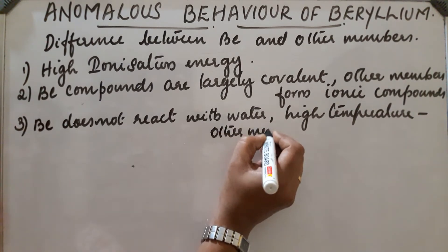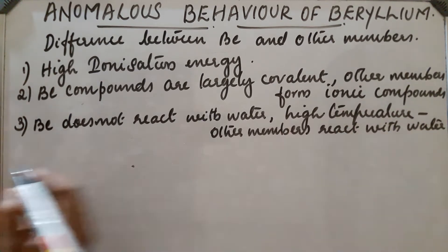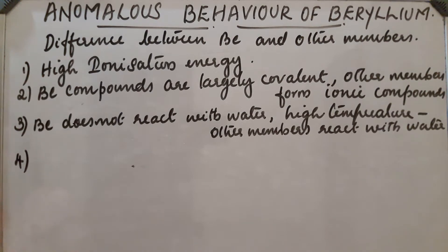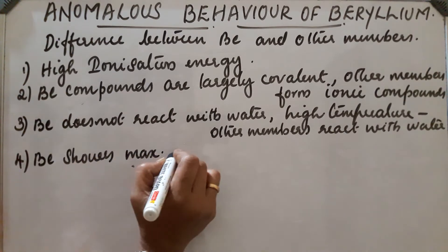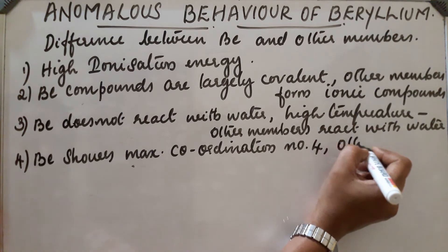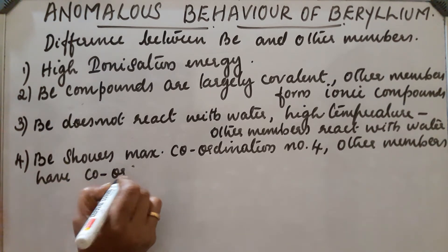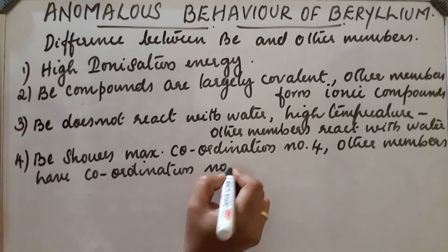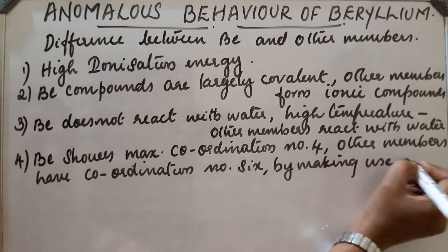Next, beryllium shows a maximum coordination number of 4, whereas other members have a coordination number of 6 by making use of their d orbitals.